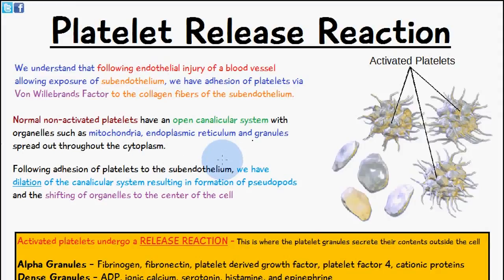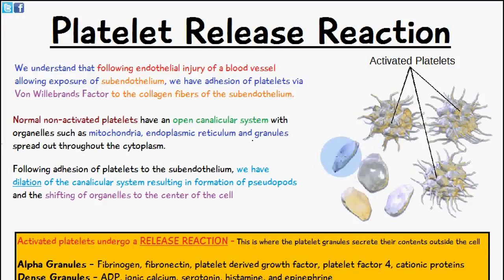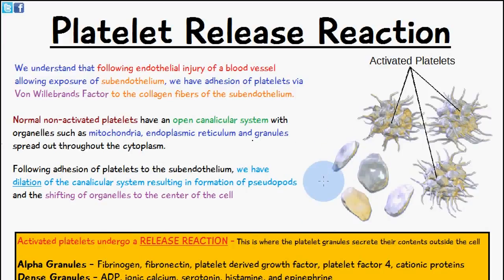In normal cases — meaning in the cases of non-activated platelets — they have an open canalicular system, which basically means they have an open sort of canal within the cell itself. Within the actual cell you'll find organelles like mitochondria, endoplasmic reticulum, and granules, and these are spread out throughout the cytoplasm.